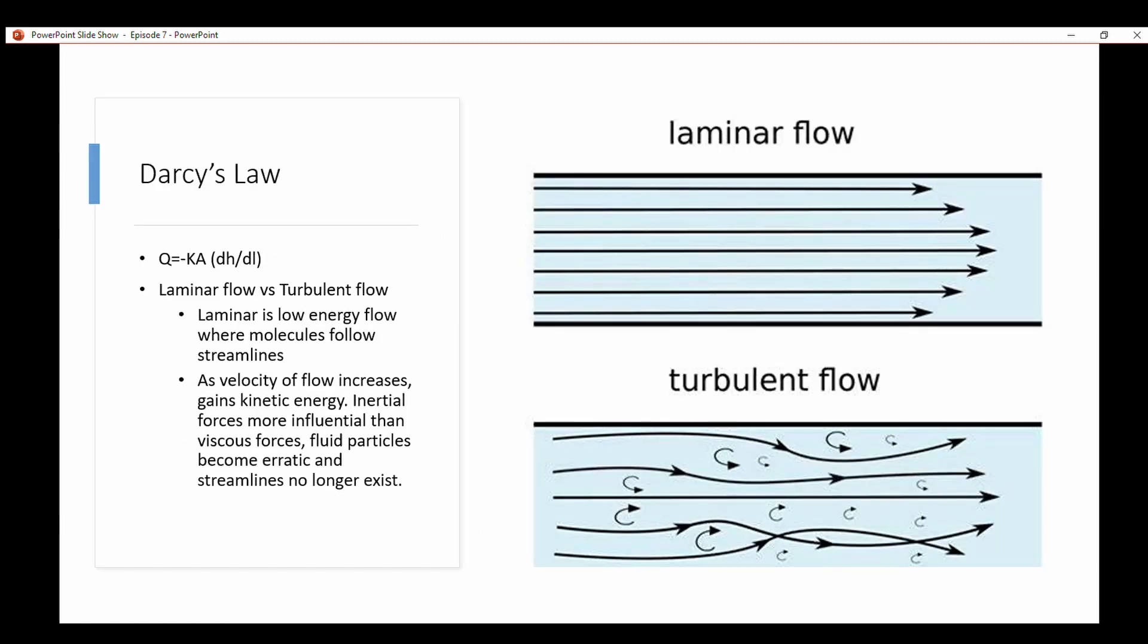Darcy's law. This is review in terms of the formula. Q, which is the discharge, equals negative K, which is hydraulic conductivity. A is the cross-sectional area. DH over DL, or hydraulic gradient, which is the change in head over the change in length. You have laminar flow versus turbulent flow. Laminar is low energy flow where molecules follow streamlines, as you can see in this picture right here. As the velocity of the flow increases, it gains kinetic energy. Inertial forces become more influential than the viscous forces. Fluid particles become erratic and streamlines do not exist anymore, as you can see in this photo. There's a reason why we're talking about this.